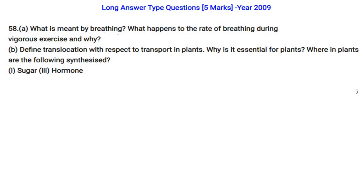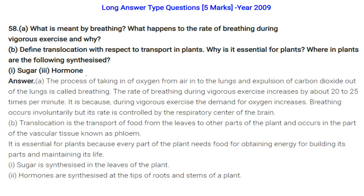What is meant by breathing? What happens to the rate of breathing during vigorous exercise and why? Breathing is the process of taking oxygen from the air into the lungs and expelling CO2 out of the lungs. During vigorous exercise, the rate of breathing increases to about 20-25 times per minute because the demand for oxygen increases. Breathing occurs involuntarily but its rate is controlled by the respiratory centre of the brain.